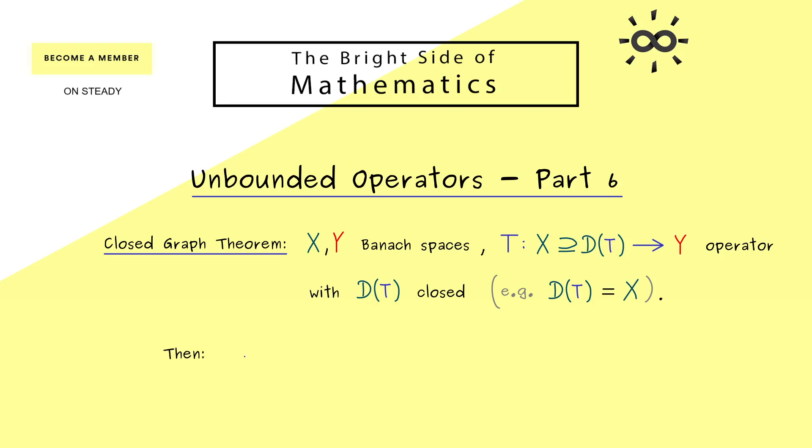Because then we have a very nice equivalence for the terms we have already introduced. Namely, the operator T is closed if and only if T is a bounded operator. And there please don't forget, for linear operators, boundedness is equivalent to continuous. So this means in this special case here, continuity and closedness describe exactly the same thing. Therefore it's called the closed graph theorem because it tells you in this case if the graph of T is closed then we already have a bounded operator.